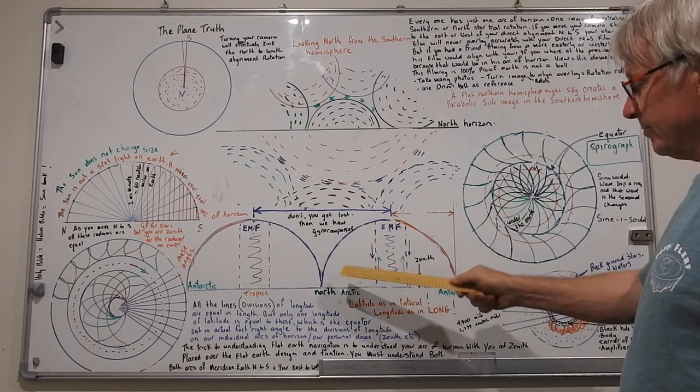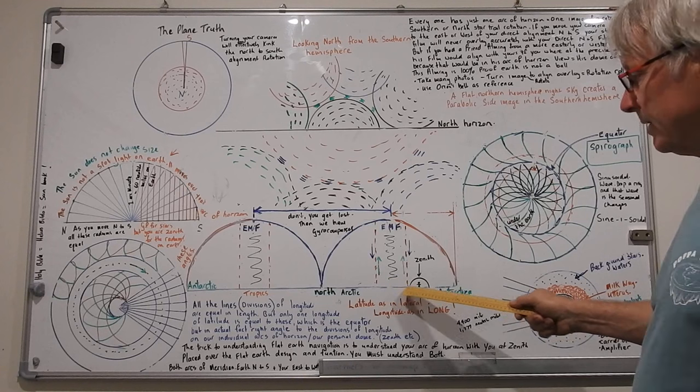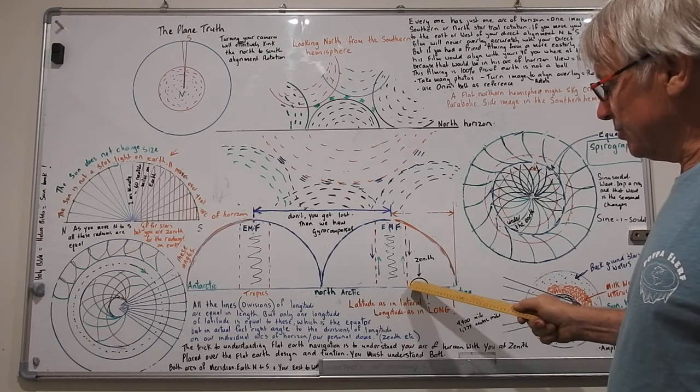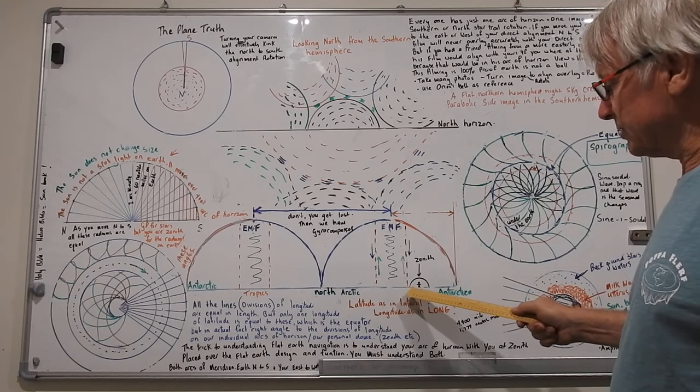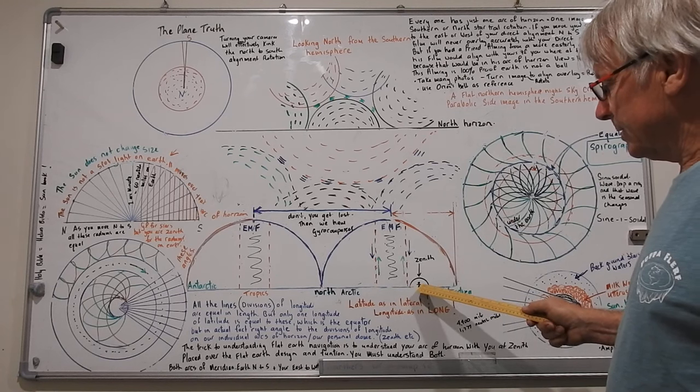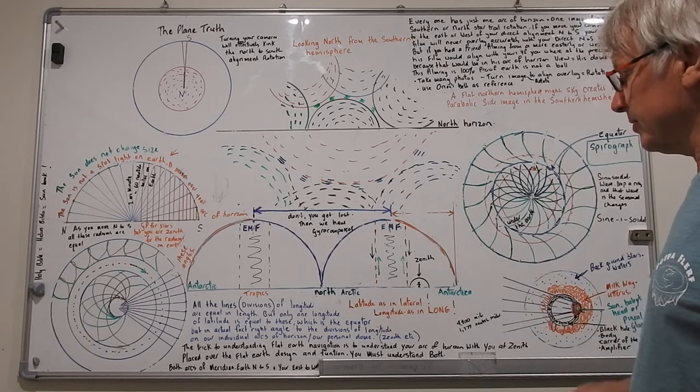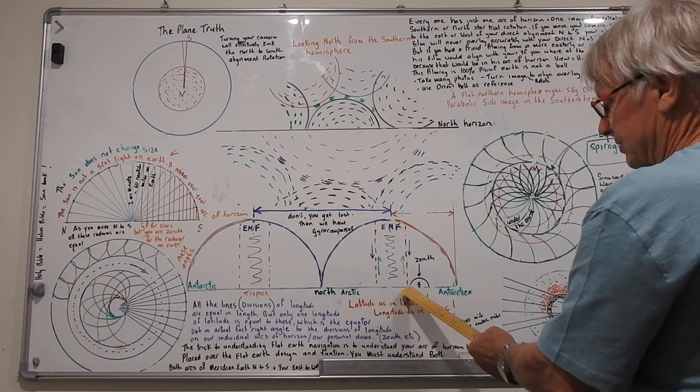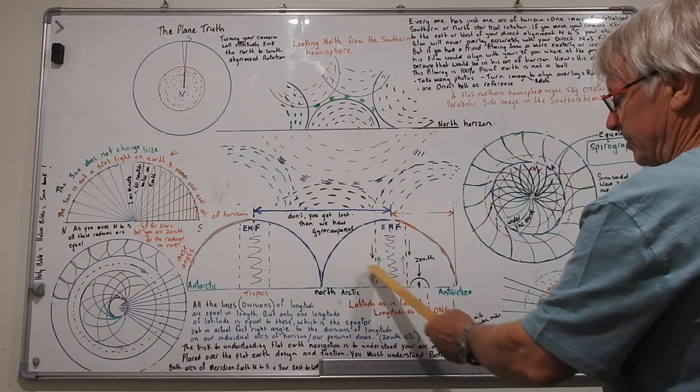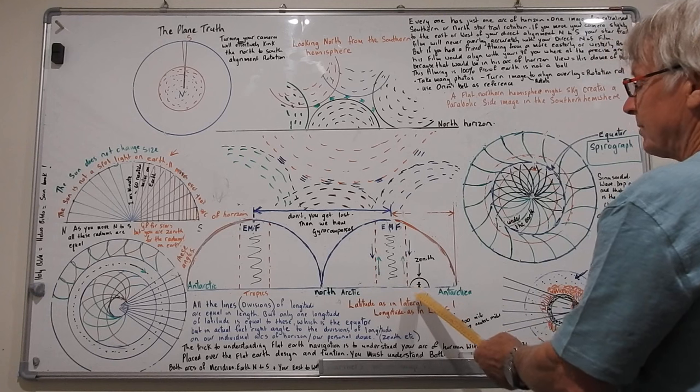If you move away, like if you're in the southern hemisphere, the northern hemisphere is moved down on your horizon. It's not within your view anymore. It doesn't mean the earth is rolled around, you don't live on a ball, it just means you're out of range basically.